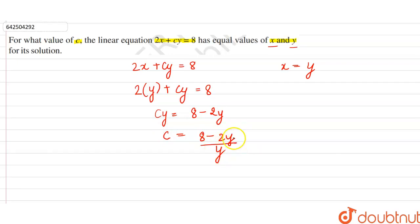This is the required answer: the value of c in the linear equation 2x + cy = 8, which has equal values of x and y, is (8 - 2y)/y.